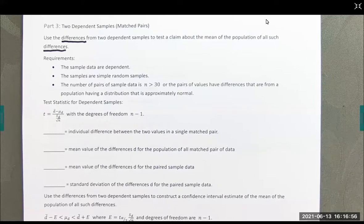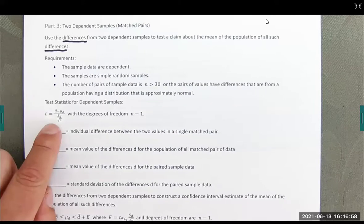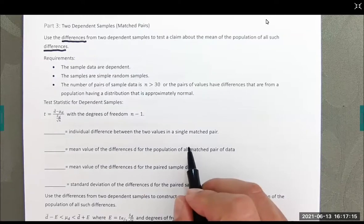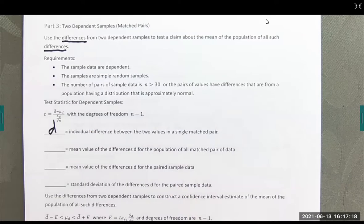Our test statistic is here. This is T equals D bar minus mu sub D over S sub D divided by the square root of n with degrees of freedom of n minus 1. So I will make sense of all these symbols. In fact, let's go ahead and start the individual difference between the two values in a single matched pair. We call that D. So each one has its own D: D sub 1, D sub 2, D sub 3 and so on.